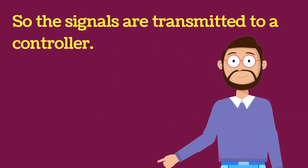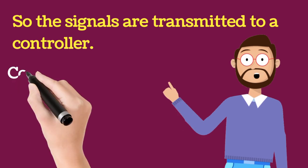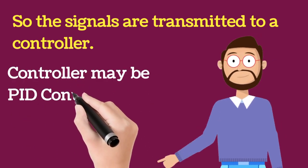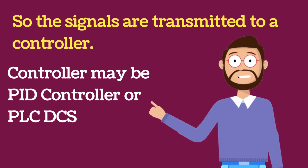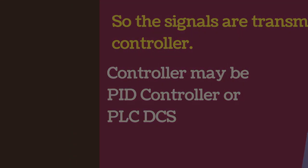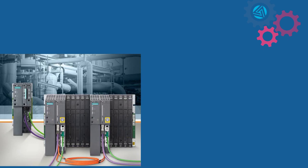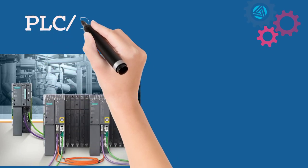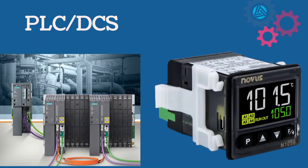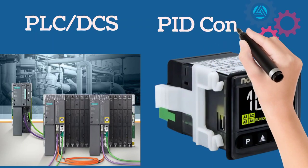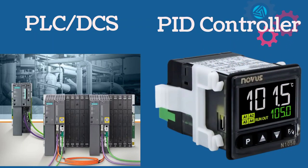So the signals are transmitted to a controller. These controllers may be a PID controller or a PLC/DCS. PID controllers and PLC/DCS are widely used in industries, as shown in the images.